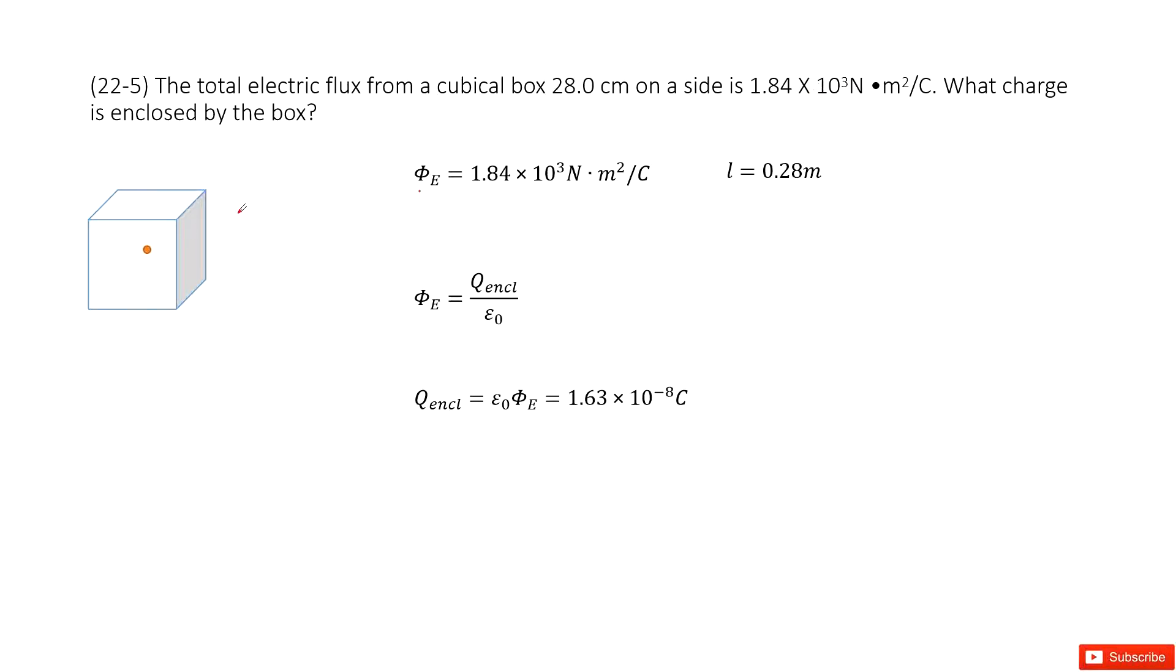This is the Gauss's law. As we know, the electric flux equals the net charge enclosed divided by epsilon naught. Agree? Now you can see we can write the function for the net charge enclosed. Q enclosed equal to epsilon naught times phi e.